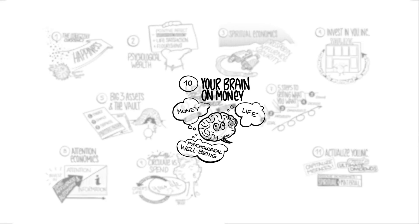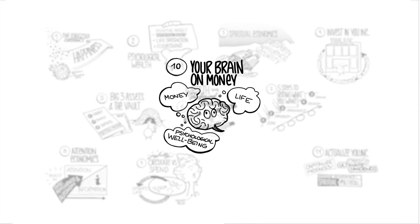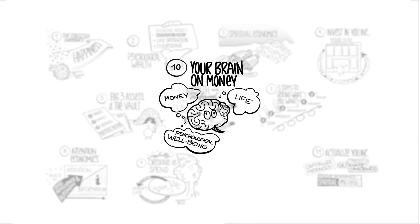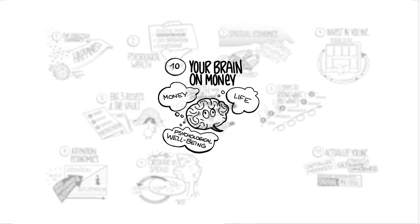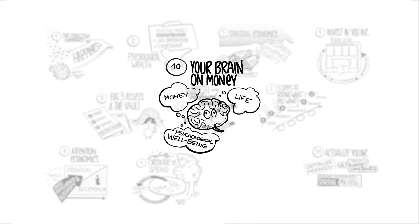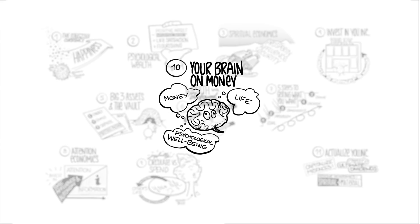The tenth big idea: science says your brain on money. We're going to look at the four things that science says we want to think about in terms of our money and our lives and our psychological well-being.